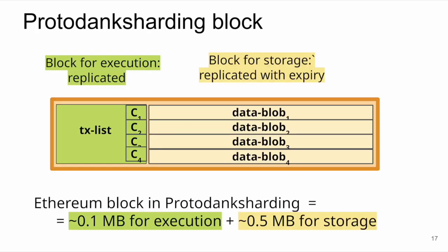At a high level, the new Ethereum block with proto-danksharding consists of two parts: the old Ethereum block (for execution), plus commitments to data blobs and the data blobs themselves. The green execution block is fully replicated to the validator set. The yellow data blobs are for storage — also fully replicated in proto-danksharding but with an expiry of one to two months. The block now comprises 0.1 megabytes for execution and 0.5 megabytes for storage.